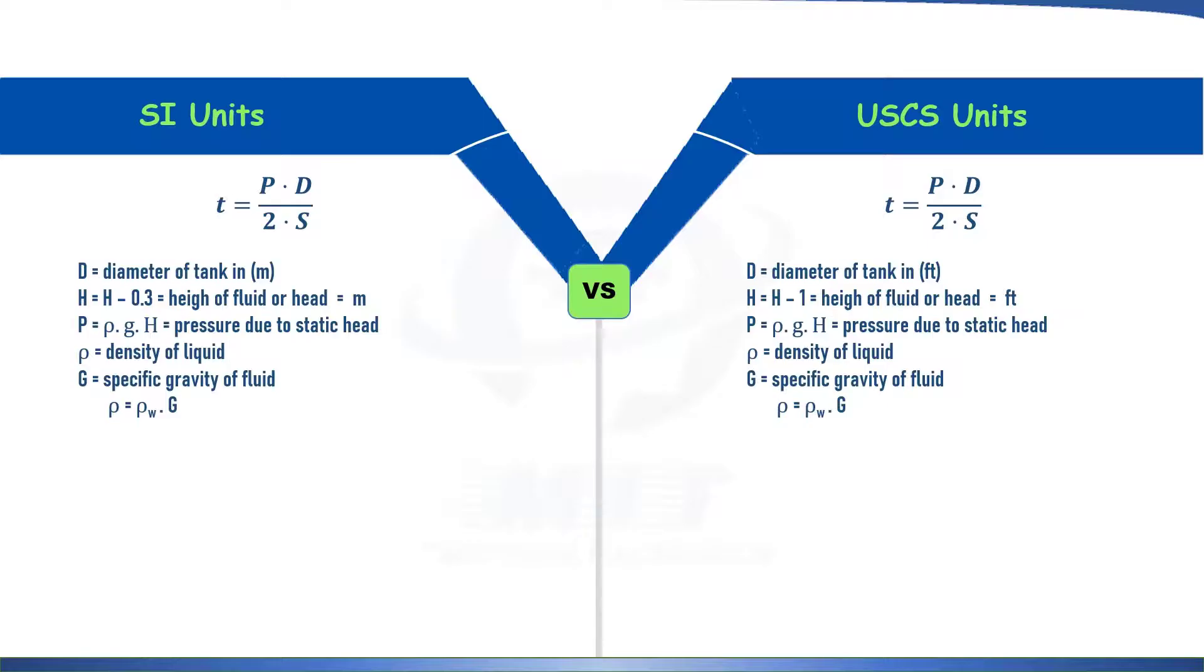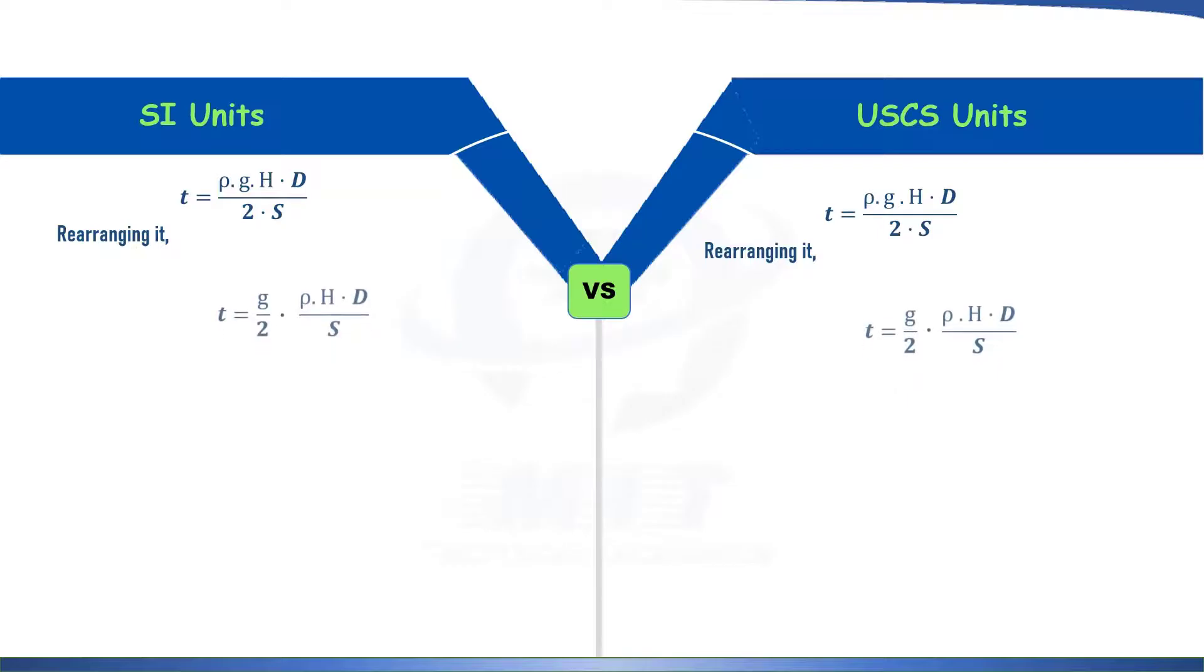We will utilize the G which is specific gravity of fluid and we know that density of any liquid is equal to density of water times specific gravity G. So we will put this in our formula. Our respective equations will become thickness equal to rho GH times D over 2 times S. Now after rearranging we will get thickness equal to G over 2 times rho HD over stress. Here as we have mentioned that H equals H minus 0.3 for SI unit, density equal to density of water times specific gravity and we know that density of water is 1000 kg per meter cube.